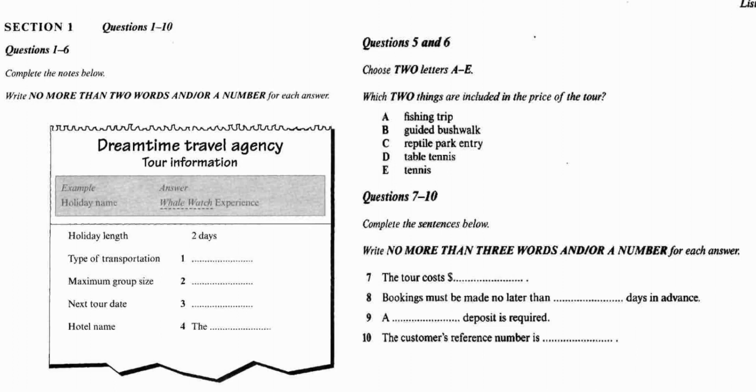Section 1. You will hear a telephone conversation between a travel consultant and a customer. First, you have some time to look at questions 1 to 4. You will see that there is an example which has been done for you. On this occasion only, the conversation relating to this will be played first.